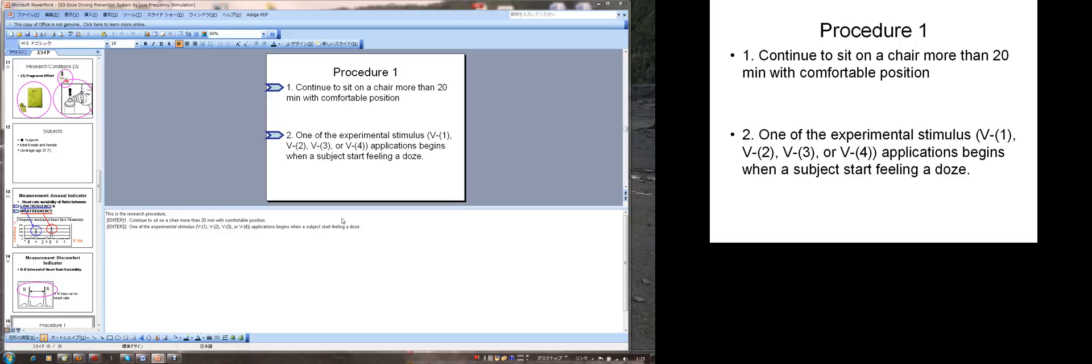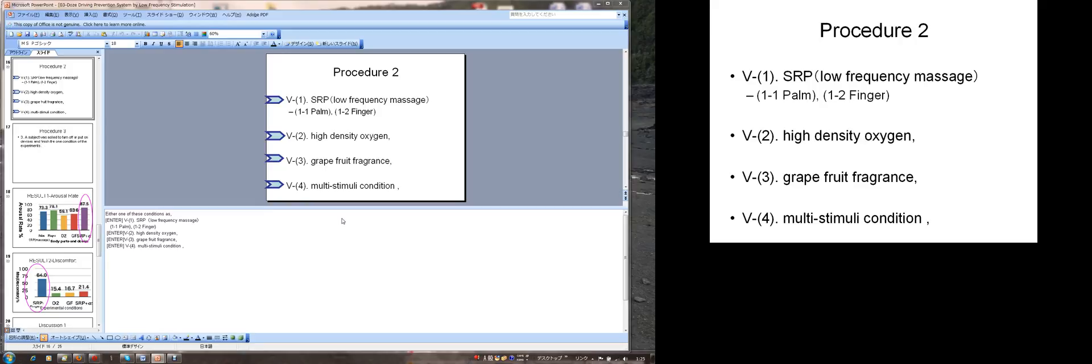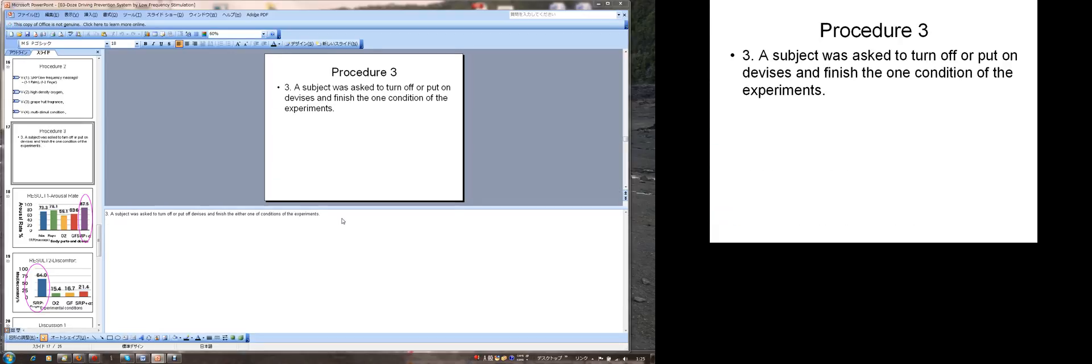This is a research procedure. Continue to sit on the chair more than 20 minutes with comfortable positions. One of the experimental stimulus, B1, B2, B3, B4 application begins when the subject starts feeding a dose. Either one of these conditions as B1 SRP low frequency massage for either palm or finger, B2 high density oxygen, B3 grapefruit fragrance, B4 multi-stimuli condition. A subject was asked to turn off or put out devices and finish either one of the conditions of the experience.